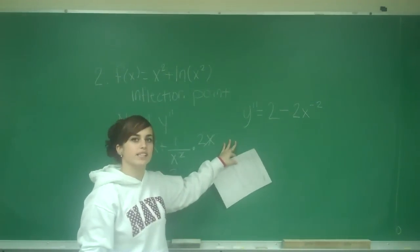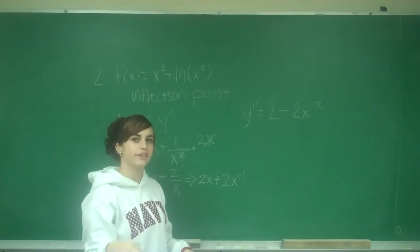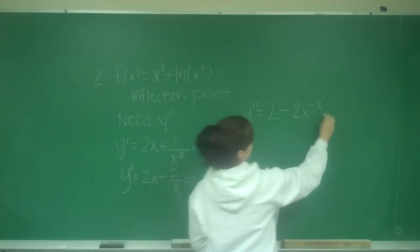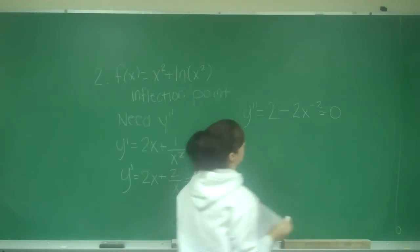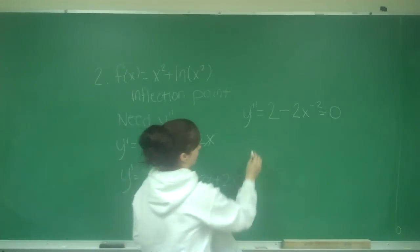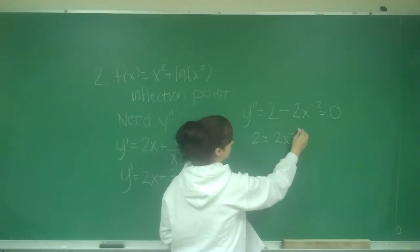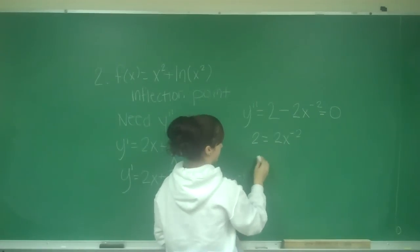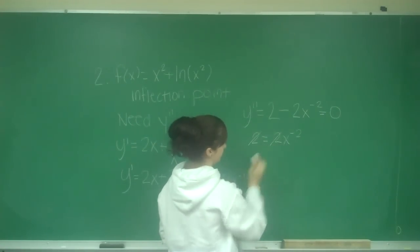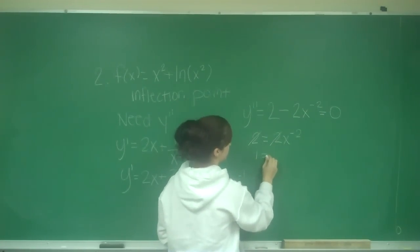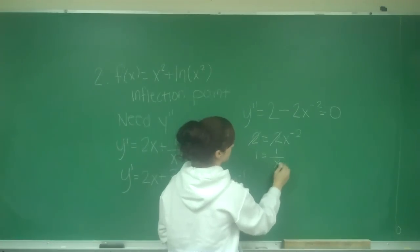Now that I have my second derivative, I set it equal to 0 to find the inflection points. 2 equals 2x to the negative 2, which is—we can take off the 2's from both sides—so I have 1 equals 1 over x squared.